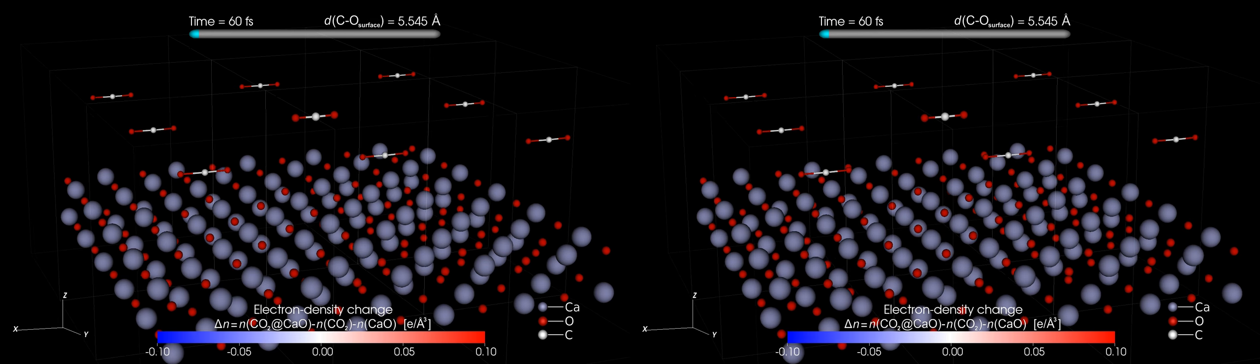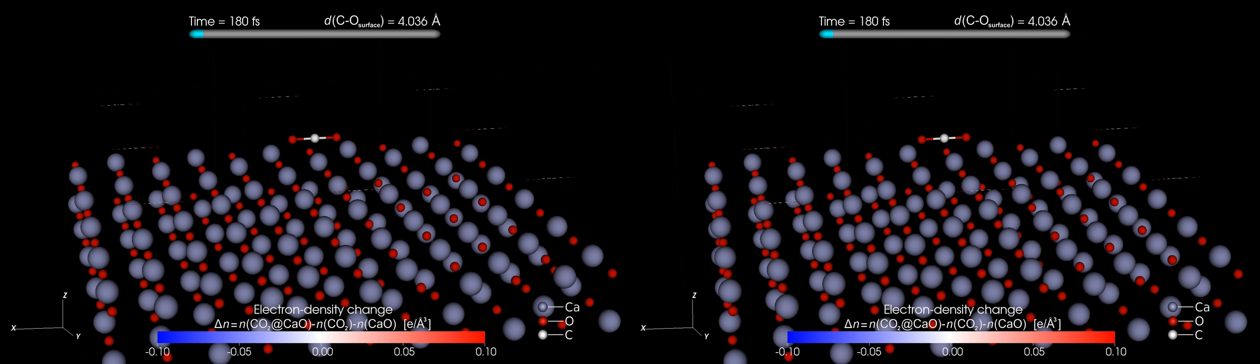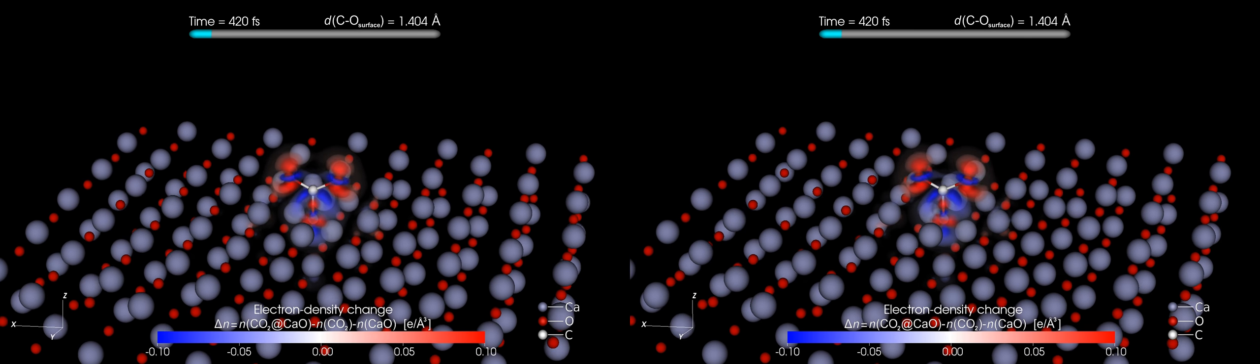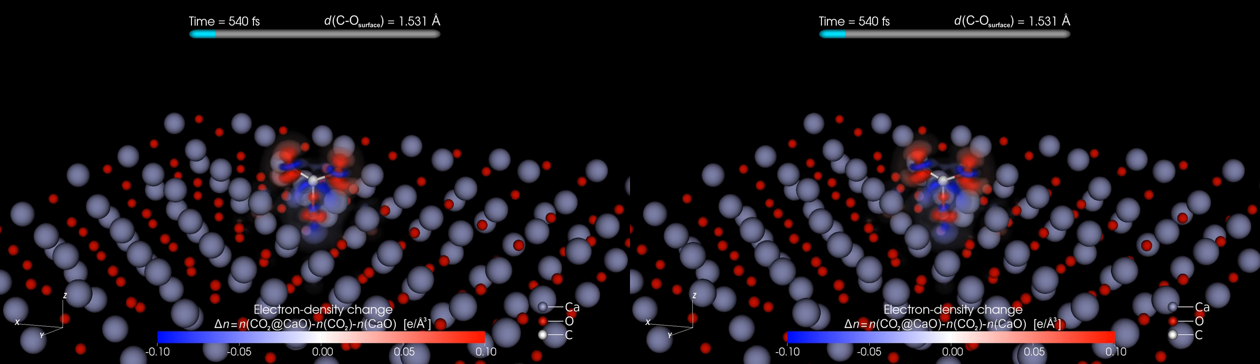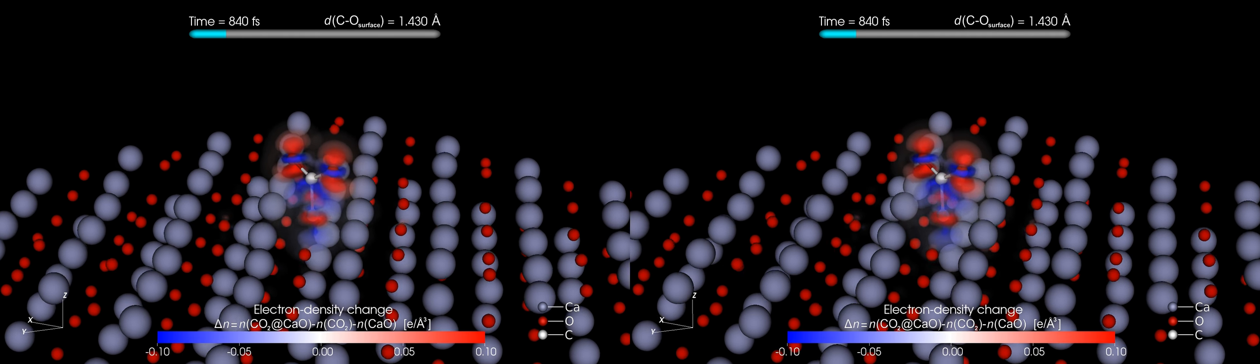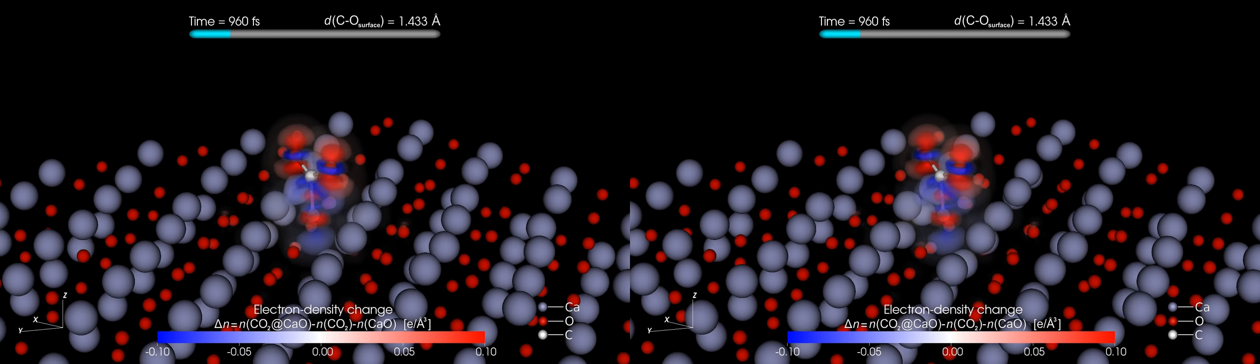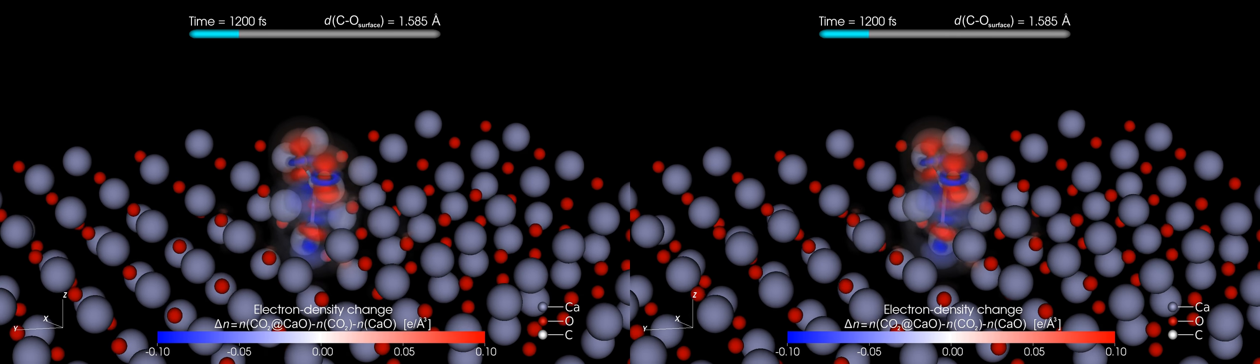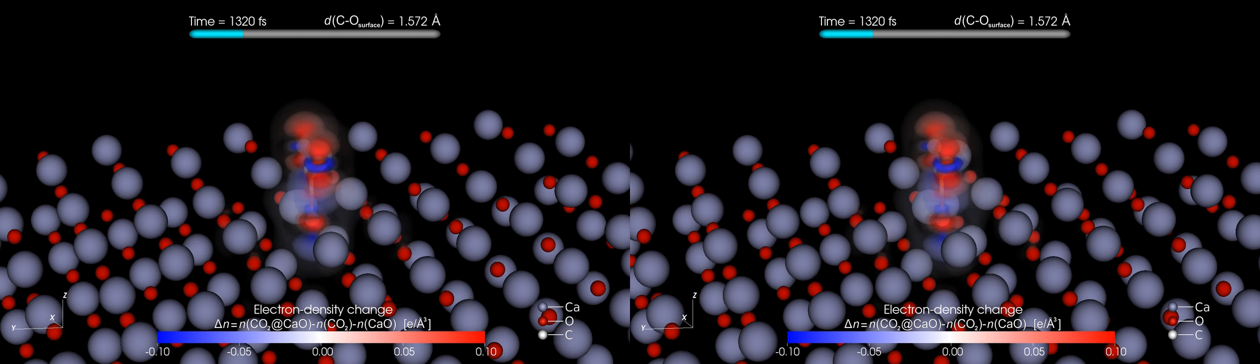The atoms in the CO2 molecule are held together by chemical bonds created by the electrons. When the CO2 molecule gets close to the surface, the electrons redistribute. The movie shows the change of the charge density of the electrons. The red color reflects an increased electronic charge density, while the blue color marks a depletion of electrons.